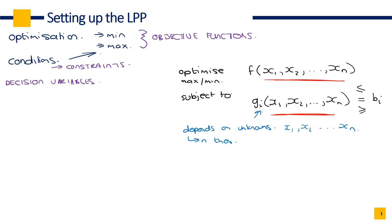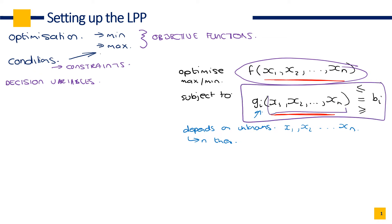Let's go through the naming. This is your objective function — your objective is to minimize or maximize, and it's the function that allows us to see how to do that. Subject to are the things constraining your objective function, because if you have profit, there will be variables limiting how much of an item you can make. The functions are dependent on the decision variables, which are the unknowns — what you want to solve for, like how many apples and pears you should have.